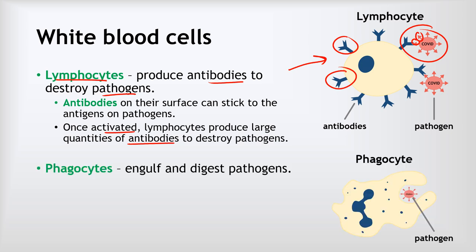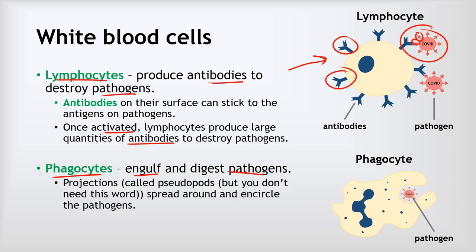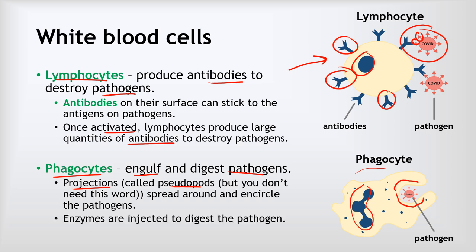We've also got phagocytes, whose job is to engulf and digest pathogens. Comparing the two cells: lymphocytes have antibodies on them, but phagocytes have a big, blobby shape and a large irregular nucleus. Phagocytes also have projections called pseudopods, which engulf around the pathogen and eventually completely encircle it. They then inject the pathogen with enzymes which digest and destroy it.